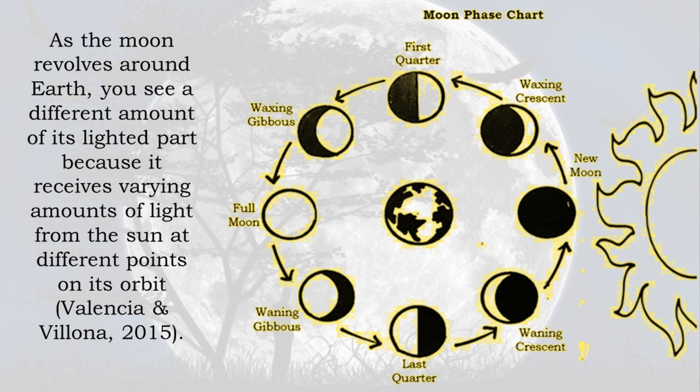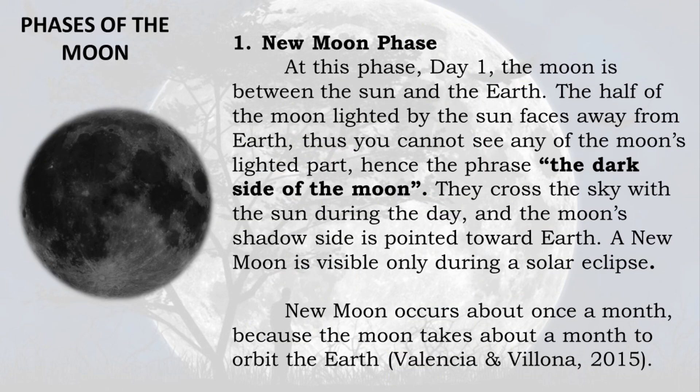As the moon revolves around Earth, you see a different amount of its lighted part because it receives varying amounts of light from the Sun at different points on its orbit. Moon phase chart: first quarter, waxing crescent, new moon, waning crescent, last quarter, waning gibbous, full moon, waxing gibbous.